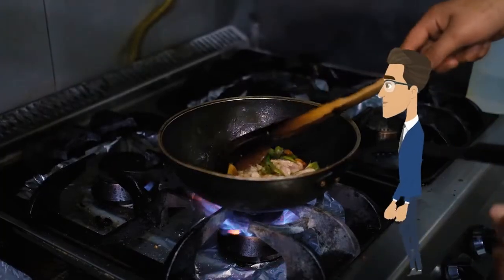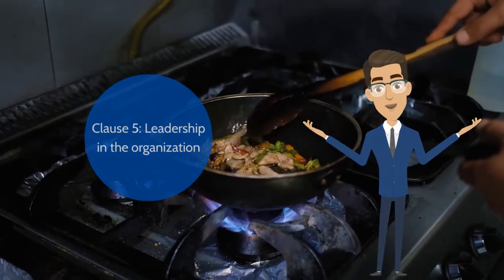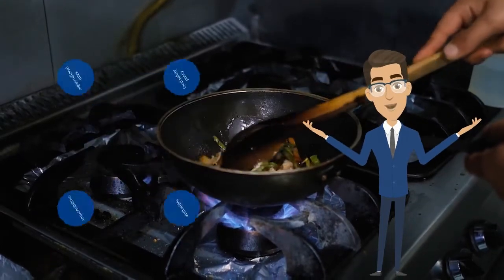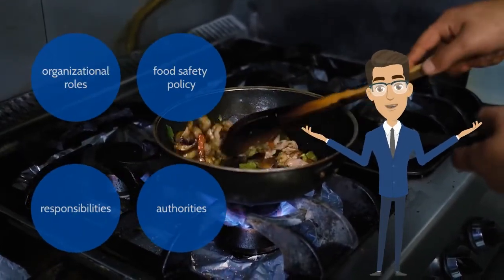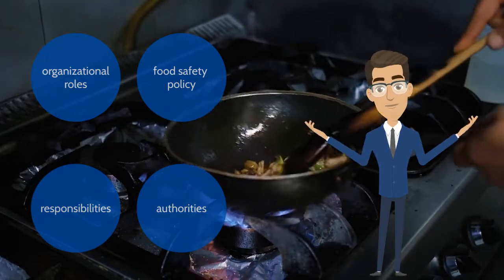Clause 5 is leadership in the organization. The top management needs to set up the food safety policy, organizational roles, responsibilities and authorities.